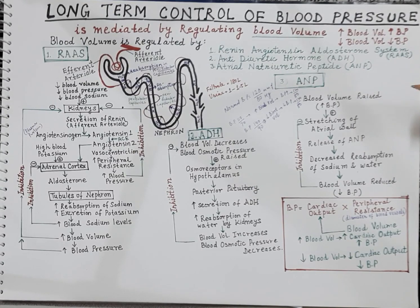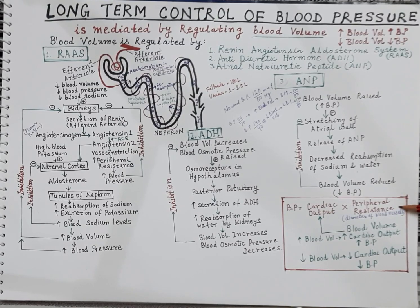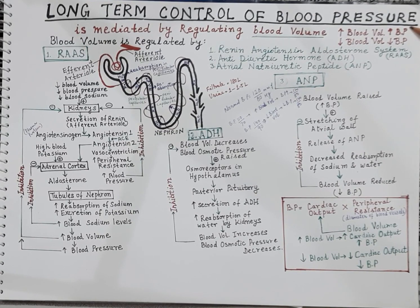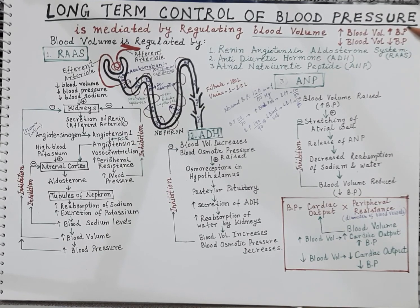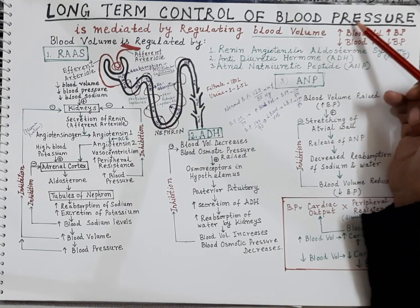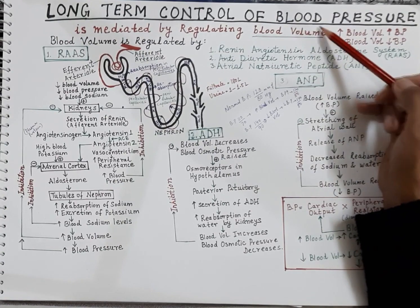In my last two videos I had discussed what exactly is blood pressure. Blood pressure is equal to cardiac output into peripheral resistance. In my last video I had discussed short-term control of blood pressure. In this video I am going to discuss the long-term control of blood pressure, which is mediated by regulating the volume of blood in the body.